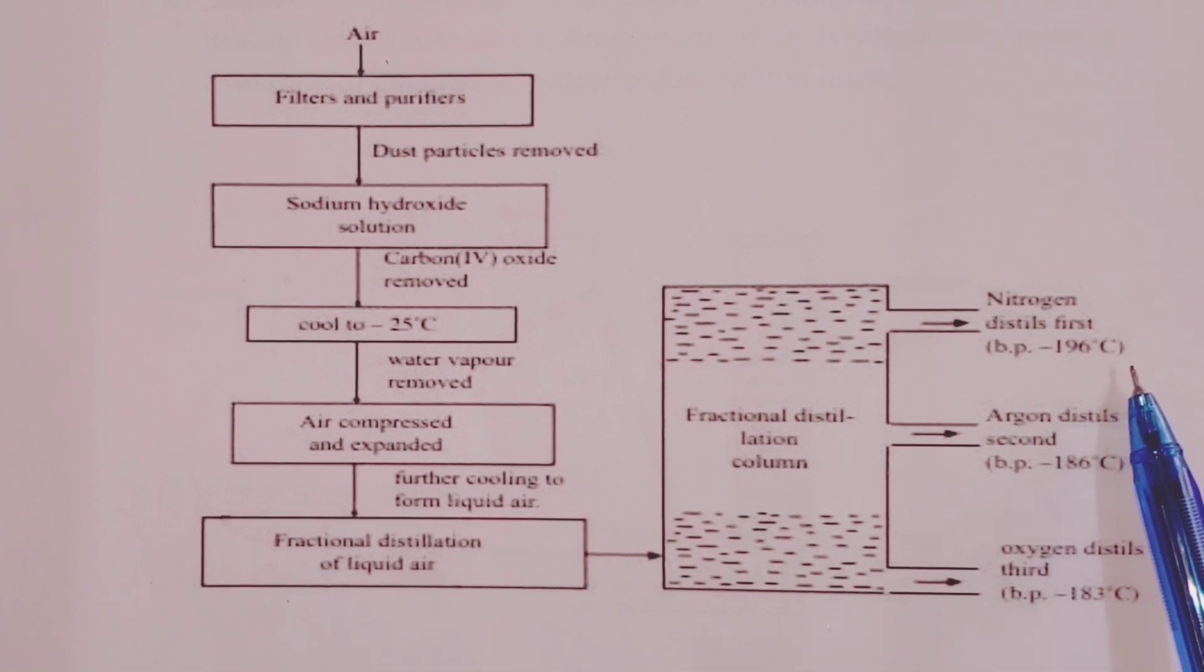Nitrogen gas is followed by argon, which distills off at negative 186 degrees Celsius, and oxygen distills last at negative 183 degrees Celsius. This summarizes the industrial isolation of nitrogen from air.